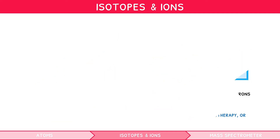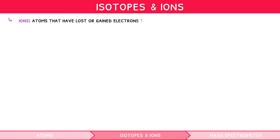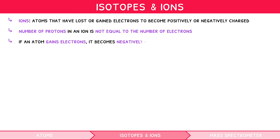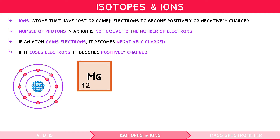Now, let's look at ions. Ions are atoms that have lost or gained electrons to become positively or negatively charged. This means that the number of protons in an ion is not equal to the number of electrons. If an atom gains electrons, it becomes negatively charged, and if it loses electrons, it becomes positively charged. For example, magnesium-24 has an atomic number of 12 and a mass number of 24, so it has 12 protons and 12 neutrons. As a neutral atom, the number of electrons equals the number of protons, thus it also has 12 electrons.